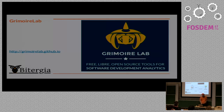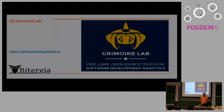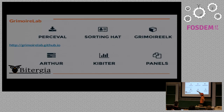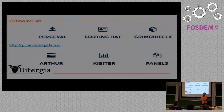You can find more information about GrimoireLab at grimoirelab.github.io, where you have access to all the components, all the source code, and some documentation. Most of the components are listed there. Percival retrieves information from repositories. SortingHat deals with affiliation — it tries to store affiliation for every person and handles unique identities, because people use different identities in different data sources and even change email addresses.